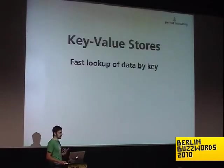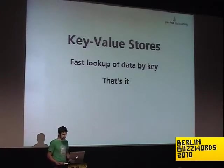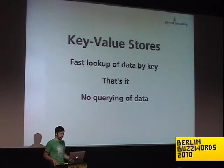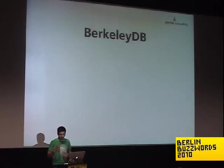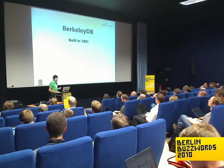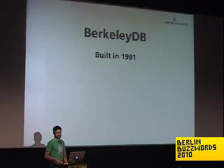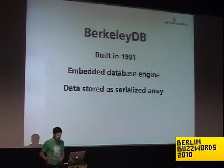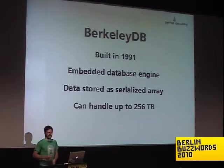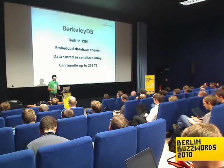Key-value stores: you just have a key and a value, and you use the keys to look up that data — that's pretty much it. It's kind of mind-boggling because you might ask what you can do with such simple access, but you can do a lot. There's a tool called Berkeley DB, built in 1991 — it was an embedded database engine where you could store your data as a serialized array. It's still in use today and can apparently handle up to 265 terabytes of data in one database. It's still actively used even by tools built today.